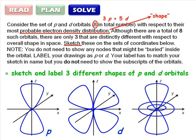Almost done. The final stage is to check. Have we sketched and labeled three different p and d orbitals? Three sketches, yes, but only two labels. I'll add the last, and we're done.